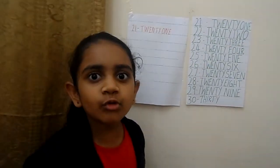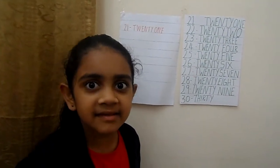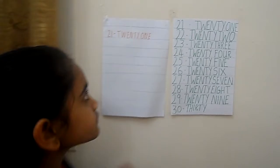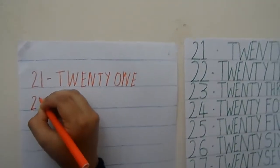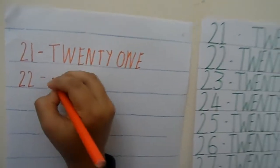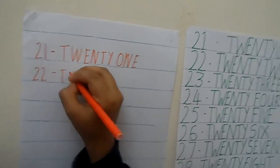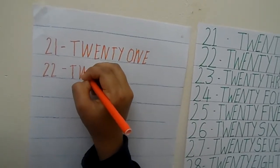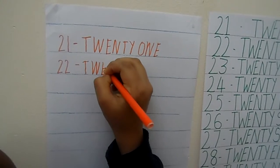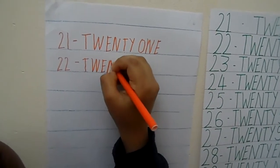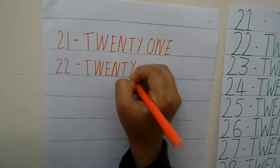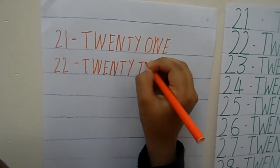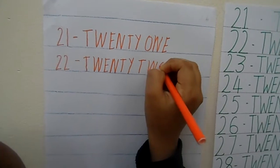Now what is the next number? 22. So let's see how to write it. First 2, then again 2. 22. Now let's see the number name of 22: T, W, E, N, T, Y, T, W, O.